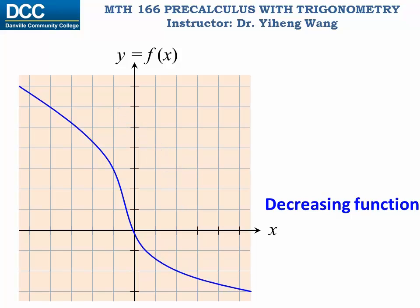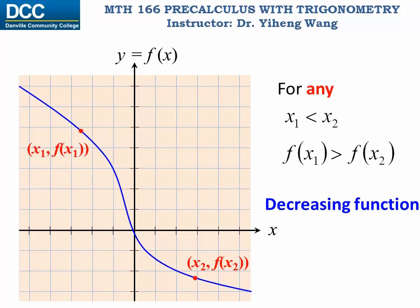Algebraically, for a decreasing function, for any two points on this graph, if x1 is smaller than x2, then f(x1) must be bigger than f(x2).